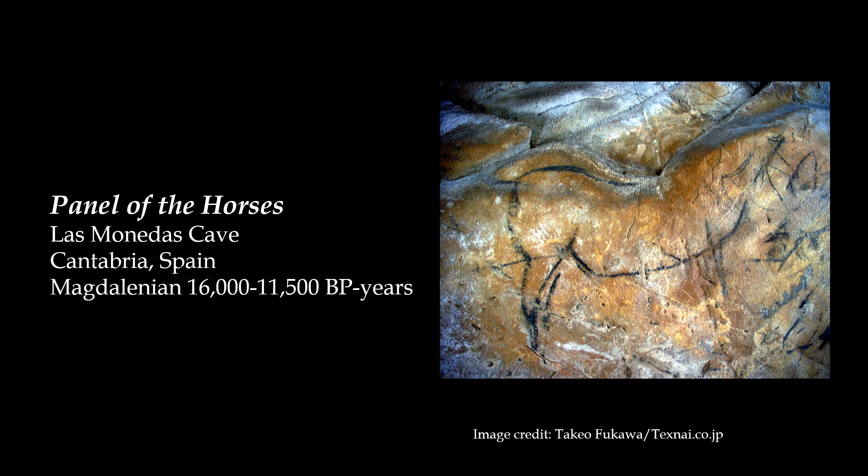We begin our journey to answer the origins of the Ice Age art question at the Las Monetas Cave in the northern region of Spain, where all of the panels in this presentation are located. On a panel deep within the Las Monetas Cave, there is a horse whose back dips along the natural contour of the wall and has lines marked with charcoal. What is most striking about this horse, presumably a pregnant mare, is that she is without a head.